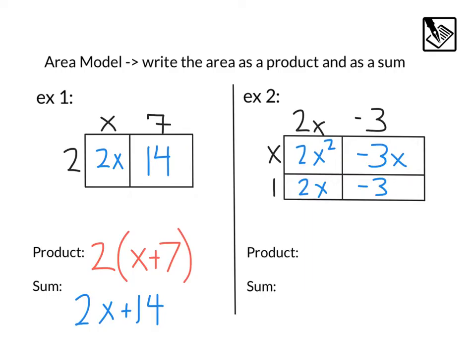Our product would be the area of the big rectangle. In this case, x plus 1, that is our width, right here, x plus 1, times 2x minus 3. And that would be our product.